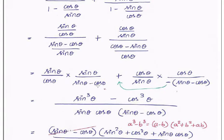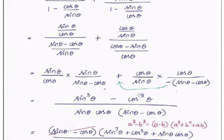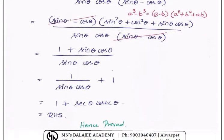Taking the LCM of both terms, the common factor is sin·theta minus cos·theta. The remaining factors are sin·theta and cos·theta respectively, so the combined term is sin·theta·cos·theta·(sin·theta minus cos·theta). In the numerator, sin·theta times sin·theta gives sin²·theta, and multiplying again by sin·theta from the LCM gives sin³·theta. Similarly, cos²·theta multiplied by cos·theta from the LCM gives cos³·theta.